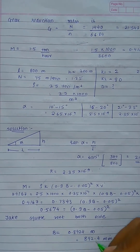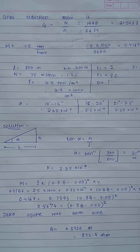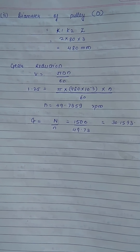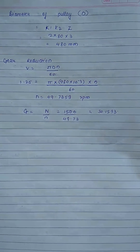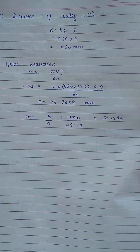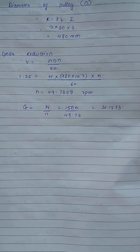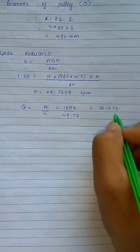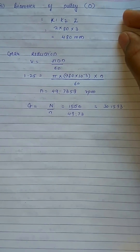After squaring both sides and taking the square root, we get B = 0.8924 meters. In the examination, if ranges like 800–900 mm are given, this can be rounded to 900 mm. Next, the pulley diameter is found directly as k1 × k2 × z = 480 mm. Belt speed was given as 75 m/min, converted to 1.25 m/s, equal to π×d×n/60. Solving for n and computing the gear ratio N/n gives a reduction ratio of 30.1593.